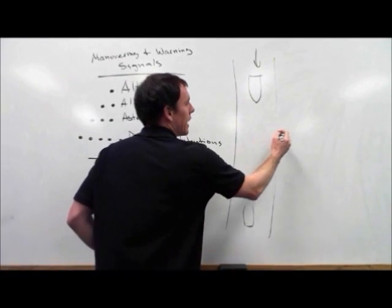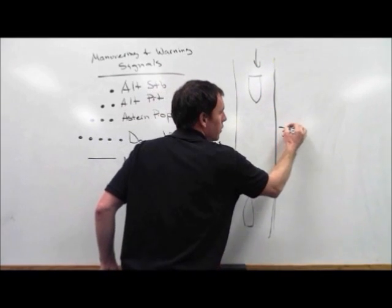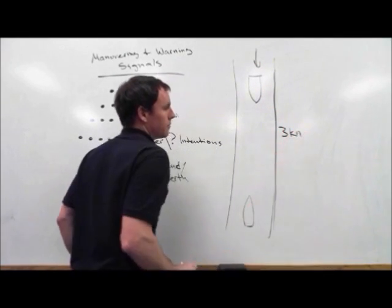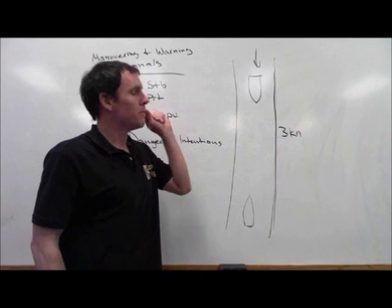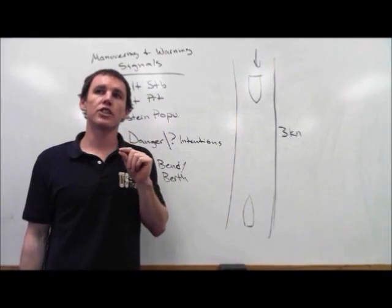And you can think about, if there's a three knot current, your current is three knots. To maintain bare steerage, the minimum speed at which she can be kept on course,